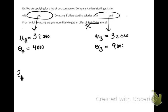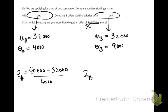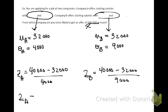The z-score for Company A would be the observation of $40,000 minus the average of $32,000 divided by the standard deviation of $4,000. The z-score for Company B would be the observation of $40,000 minus the average of $32,000 divided by the standard deviation of $9,000. For Company A, the z-score comes out to be 2.00. For Company B, the z-score comes out to be 0.89.